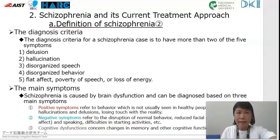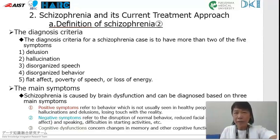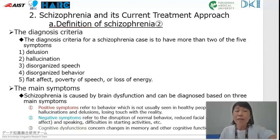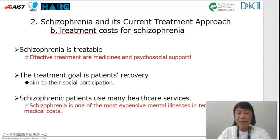The diagnosis criteria for schizophrenia requires more than 2 of 5 symptoms. Schizophrenia is caused by brain dysfunction and can be diagnosed based on 3 main symptoms. First, positive symptoms refer to behaviors not usually seen in healthy people, such as hallucinations and delusions — losing touch with reality. Second, negative symptoms refer to disruption of normal behavior, reduced facial expressions, and speaking. Third, cognitive dysfunction concerns changes in memory and other cognitive functions.